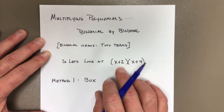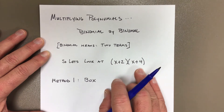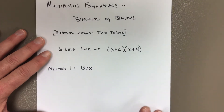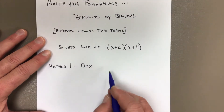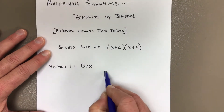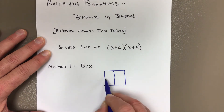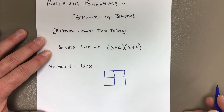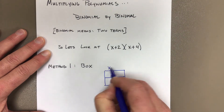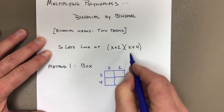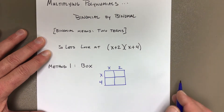So x plus 2 times x plus 4. There are a couple different ways we can do this. The first is the box method — it's a 2 by 2. So draw a 2 by 2 box. It doesn't matter which order — just put x and 2 here, and x and 4 here. Since they're positives, you can just leave them positive.